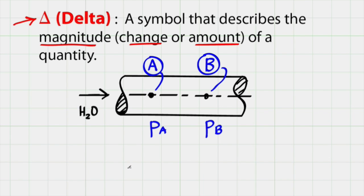Then we can write delta P equals the pressure at A minus the pressure at B. Here, delta P means the change in pressure from point A to point B. That is, the pressure at A subtracting the pressure at B.